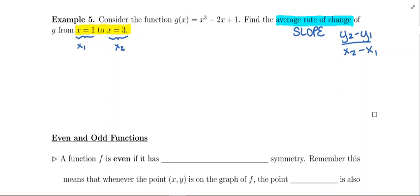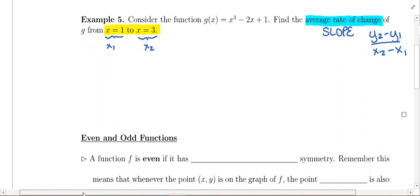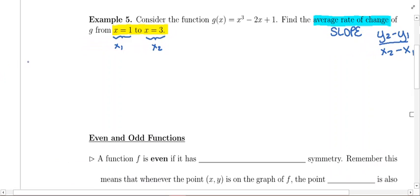So remember, how do you get it? You take each of these x values and you plug each into the function. Let's do that first. That's where you need to start. Let's first take x equals 1 and plug this x value into the function. We're going to get g of 1 is 1 cubed minus 2 times 1 plus 1.